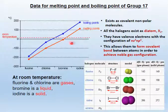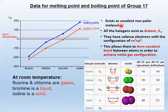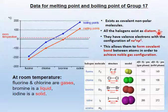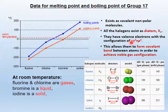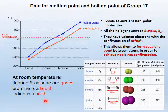For group 17, melting point and boiling point increase from fluorine to iodine. This is due to halogens existing as covalent non-polar molecules, and halogens exist as diatomic molecules — for example, Br2, Cl2, I2. Their valence electron configuration is ns²np⁵, which allows them to form a covalent bond between atoms to achieve noble gas configuration. Checking the phases: fluorine and chlorine are gases, bromine is a liquid, and iodine is a solid.